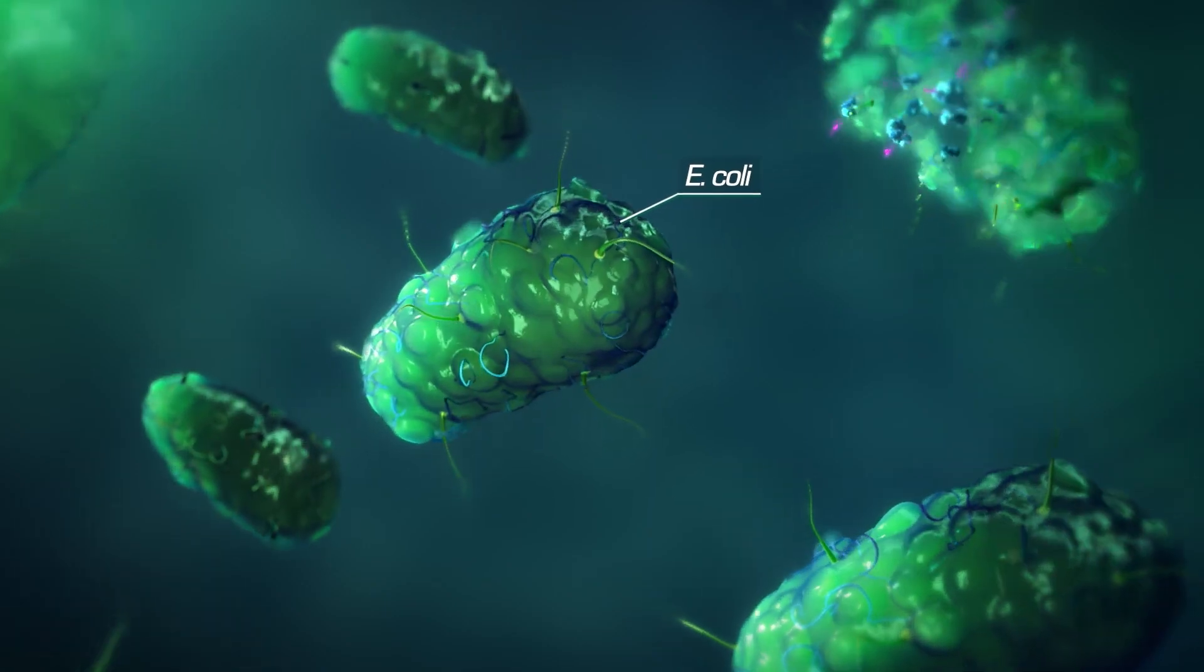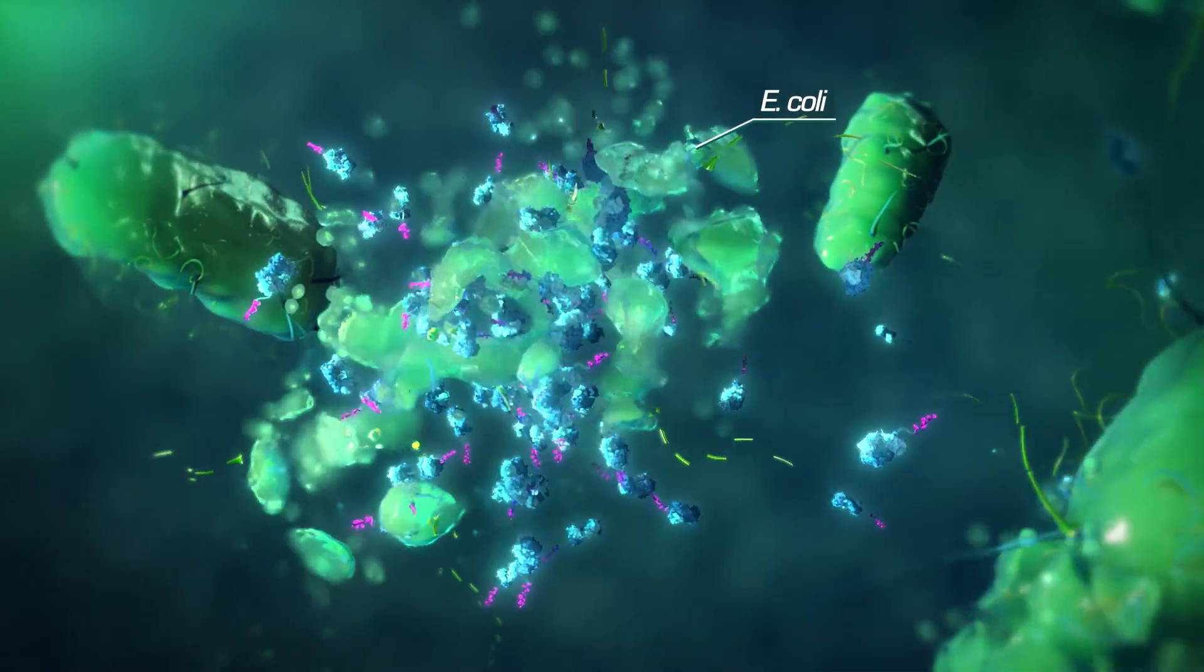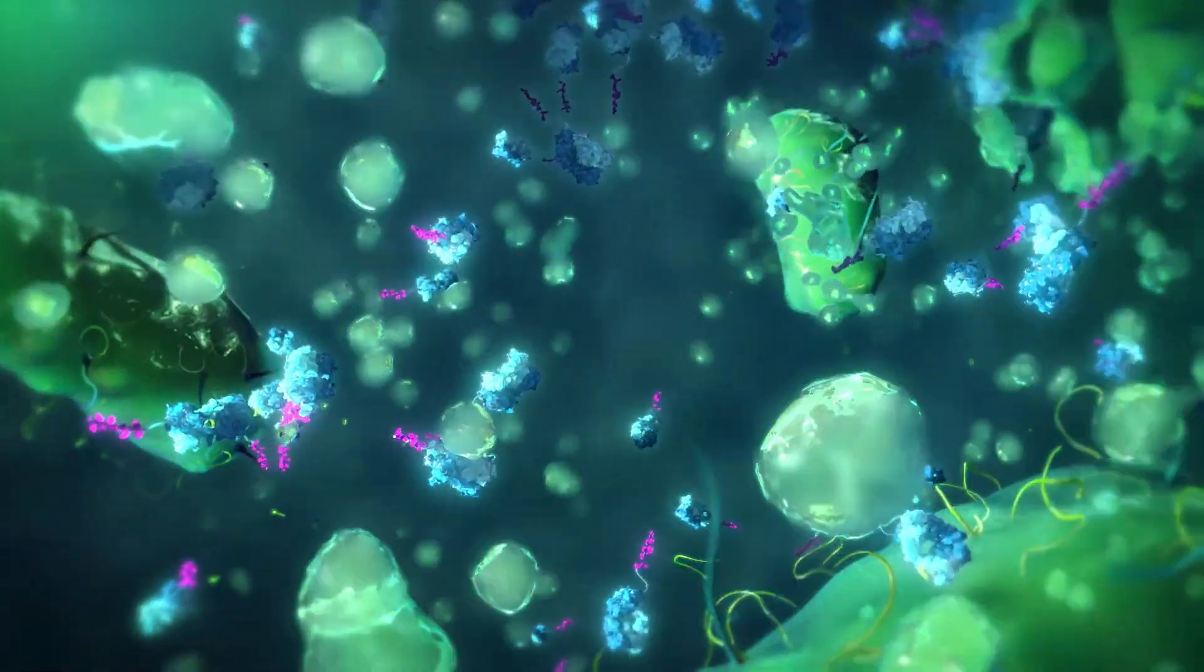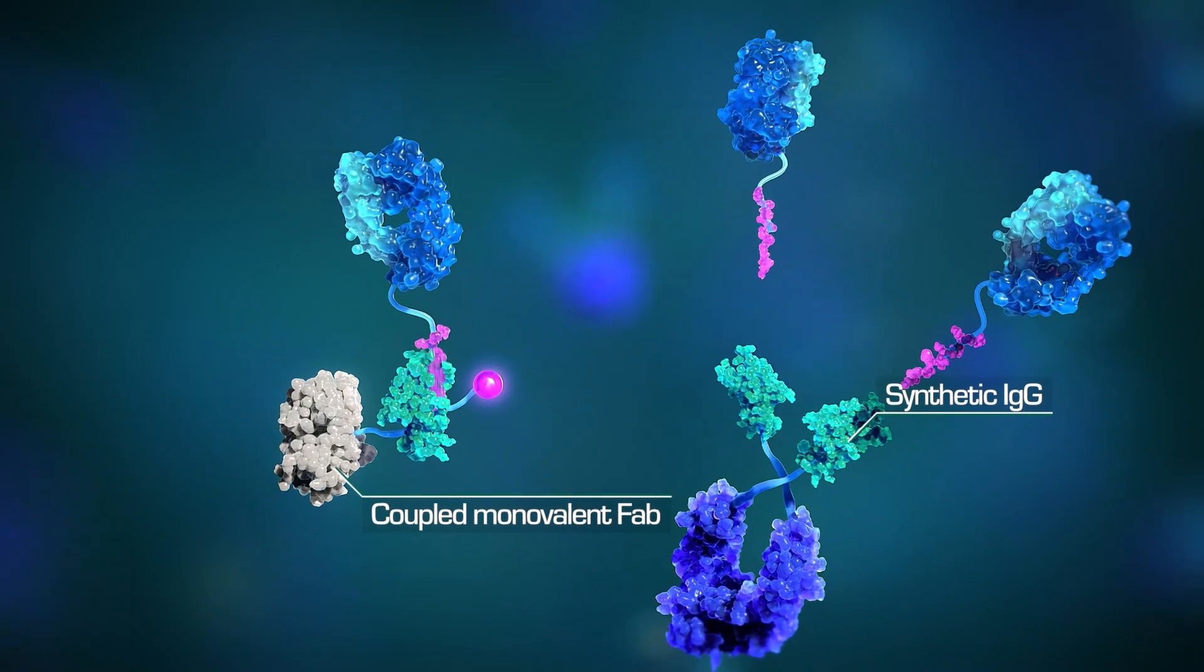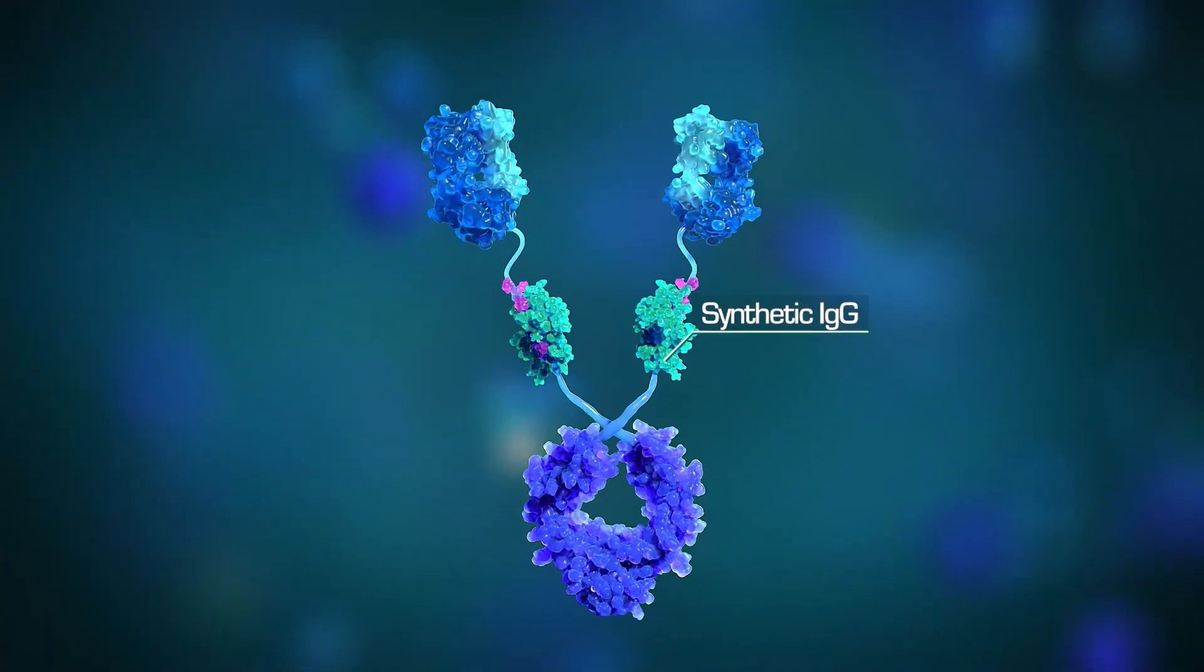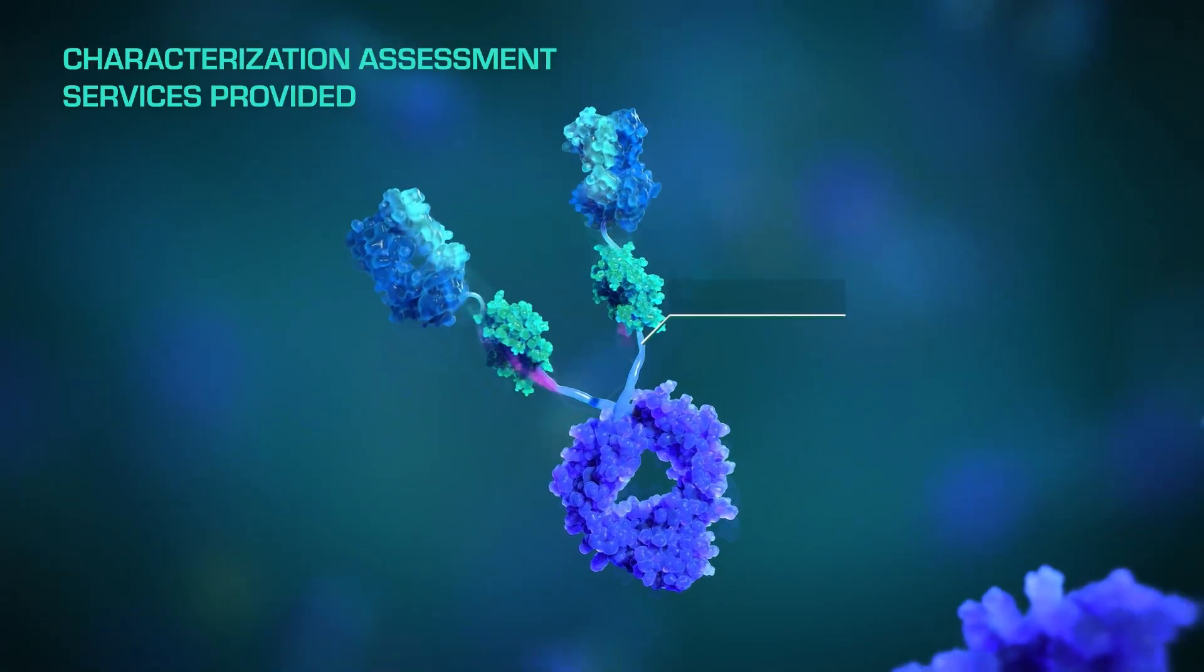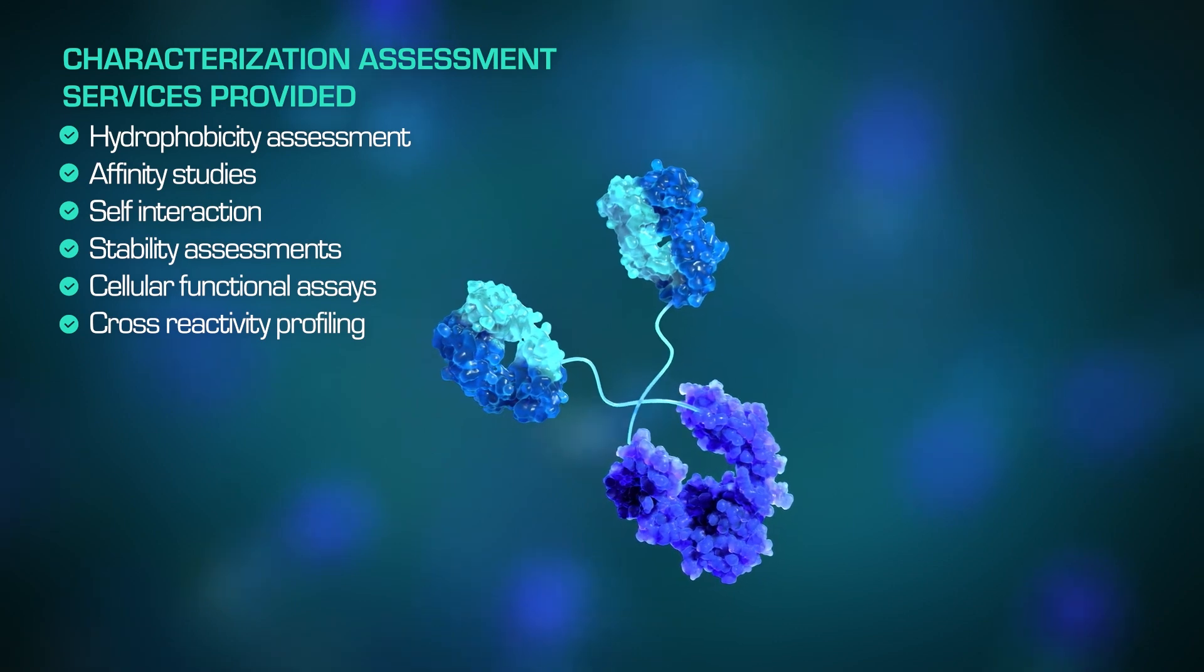This method removes the subcloning step in classic phage display pipelines, which reduces error and accelerates development. The antibodies are compatible with BioRad's Trailblazer platform, enabling fast, simple, and scalable production of multiple antibody formats for rapid and economical prototyping for antibody characterization.